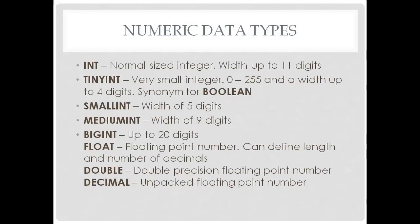Now let's get into the three categories. First we have numeric data types. We have an int, which is probably the most common — it's a normal sized integer and can have up to 11 digits. Tiny ints are very small integers, 0 to 255, with a width up to four digits. It's a synonym for boolean, so tiny int is mostly used as a one or zero to represent on and off. For instance, you may have a field in your users table called 'is_activated' as a tiny int — one if activated, zero if not.